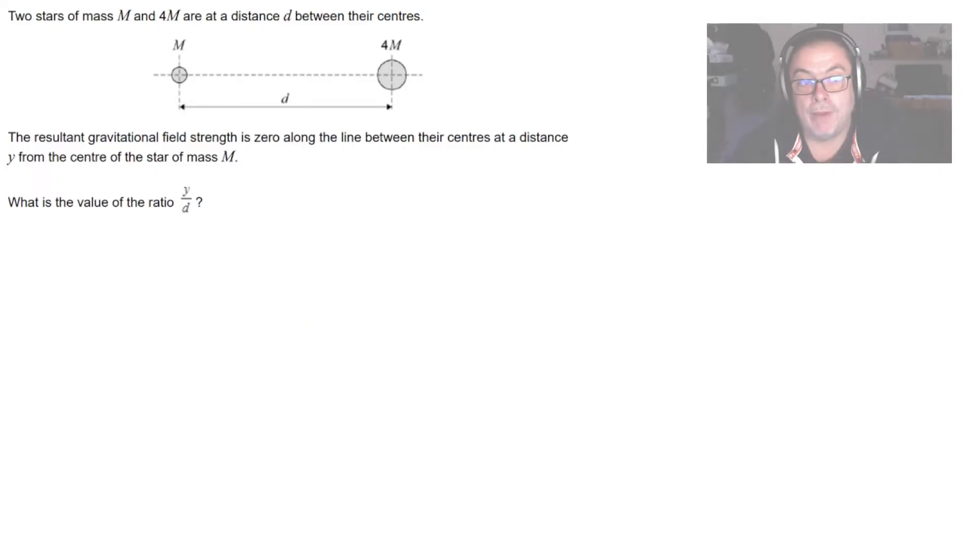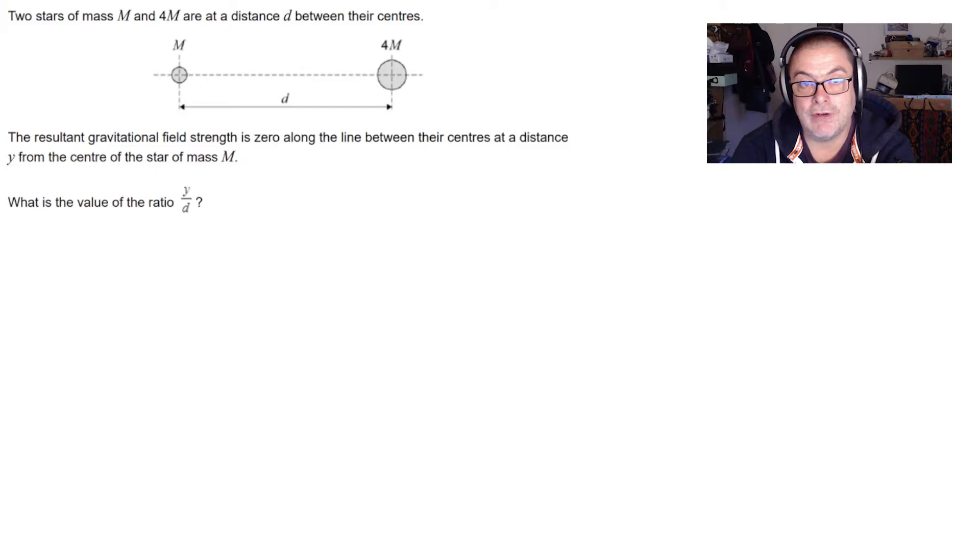What we're going to do then is to mark an imaginary point where the gravitational field strength from m is equal to the gravitational field strength from the 4m but in the opposite direction. Now that's going to be nearer to m than to 4m because m on its own has a smaller gravitational field strength.